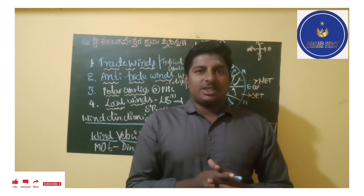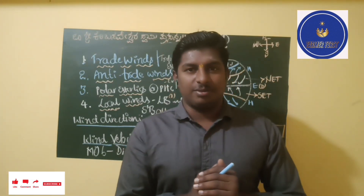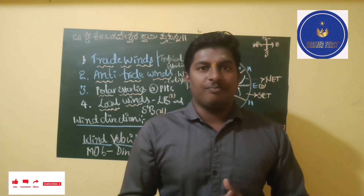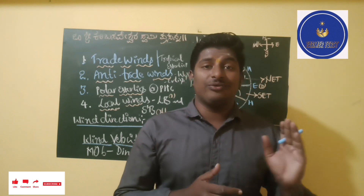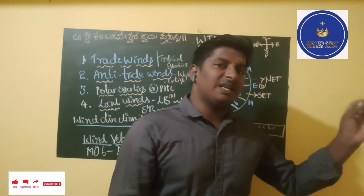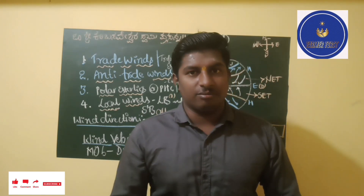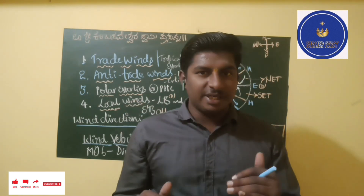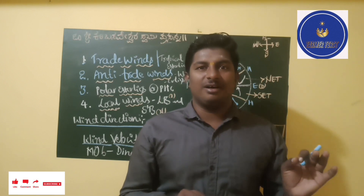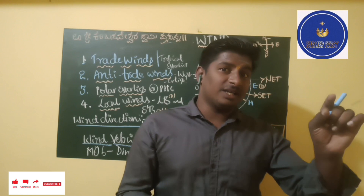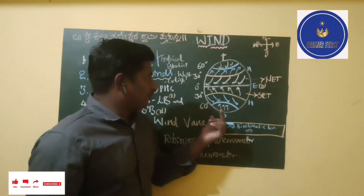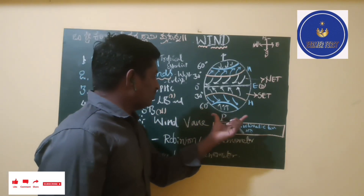These winds will be developed due to pressure gradients. As and when the temperature fluctuates, the pressure gradient will be developed, and this pressure gradient directly influences wind speed. This pressure gradient is completely dependent on temperature. Whenever the land masses and sea masses vary in temperature, the pressure will vary and pressure gradients will be created. These pressure gradients are directly proportional to wind speed. Remember: temperature and pressure are inversely proportional.